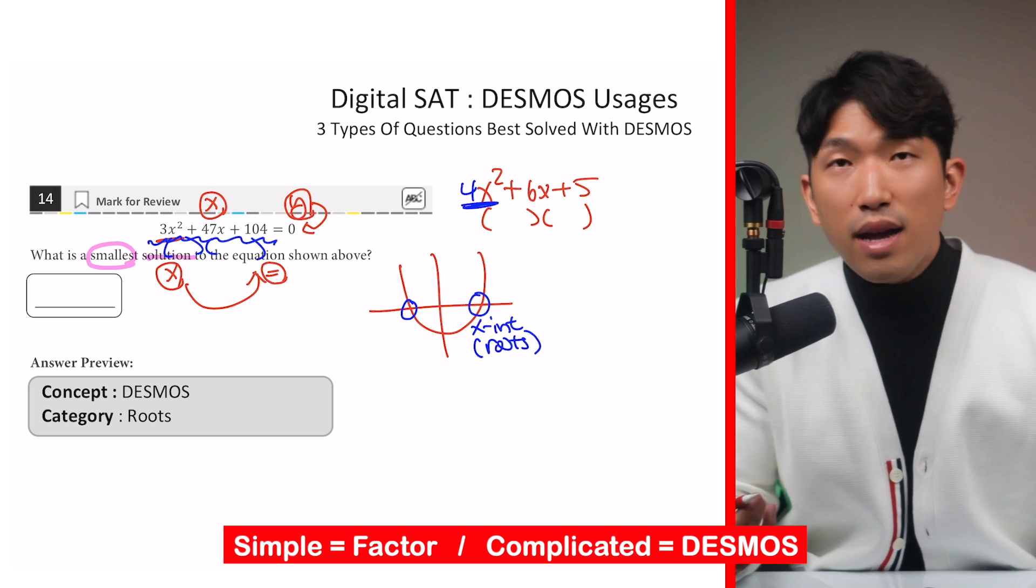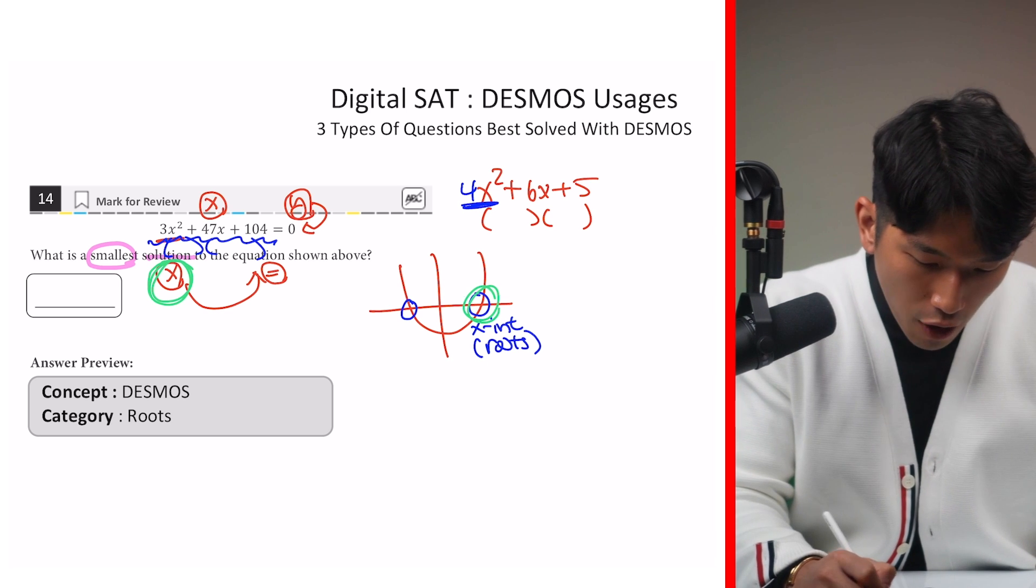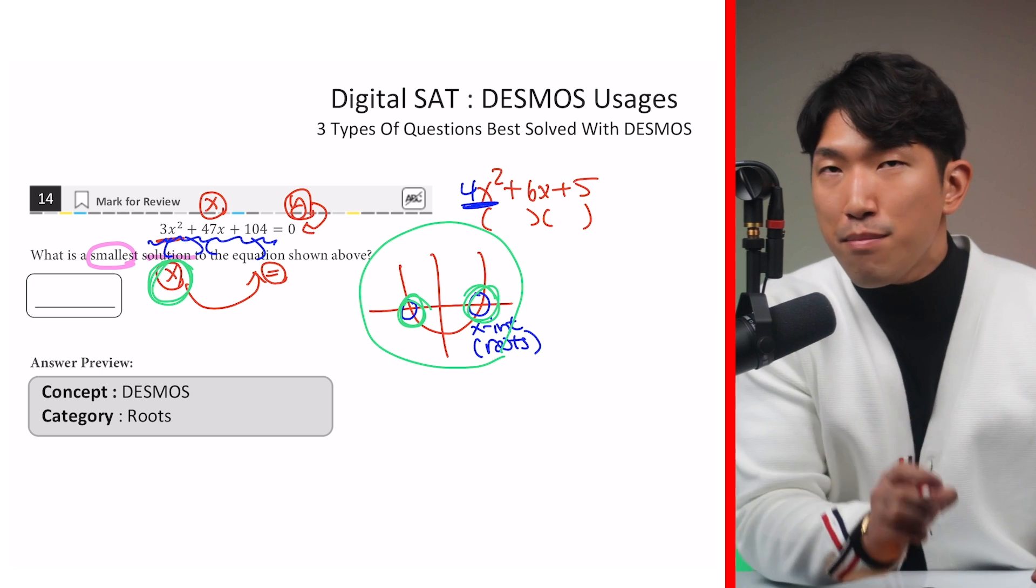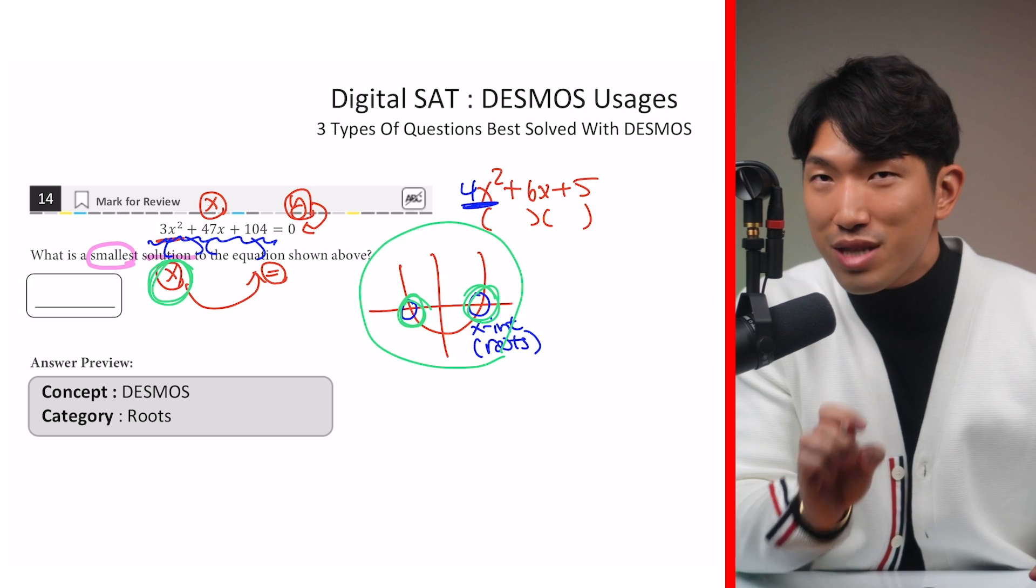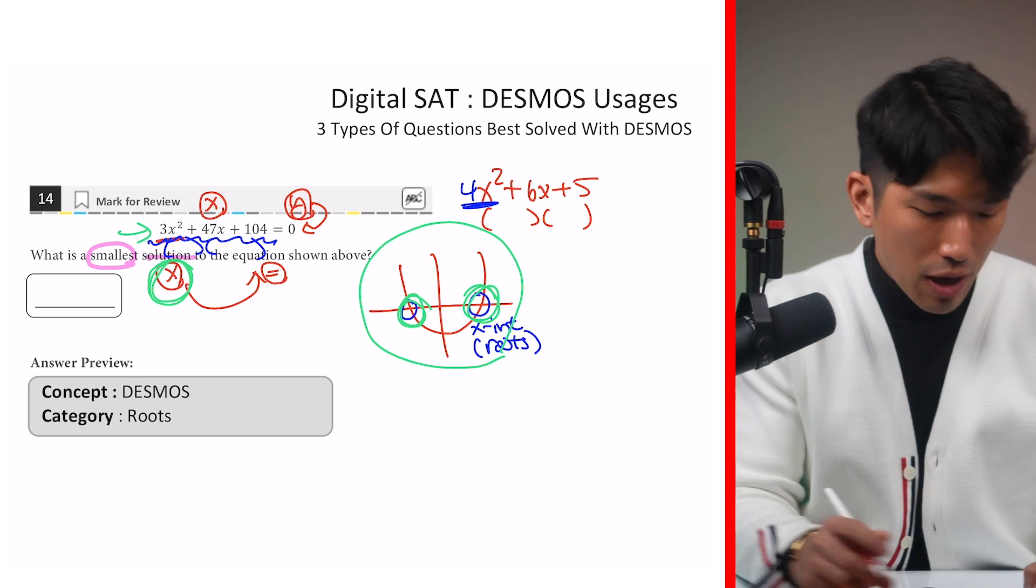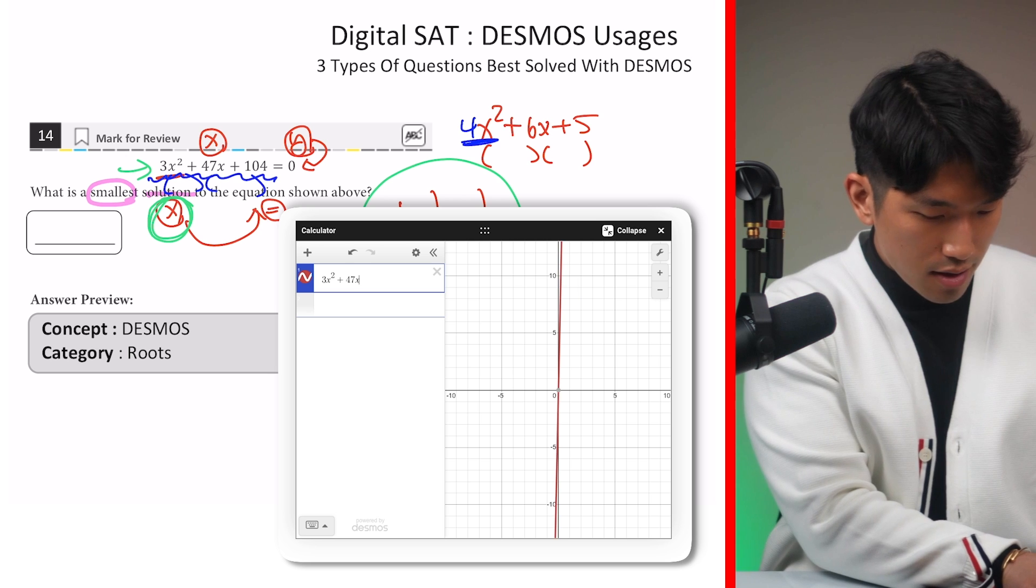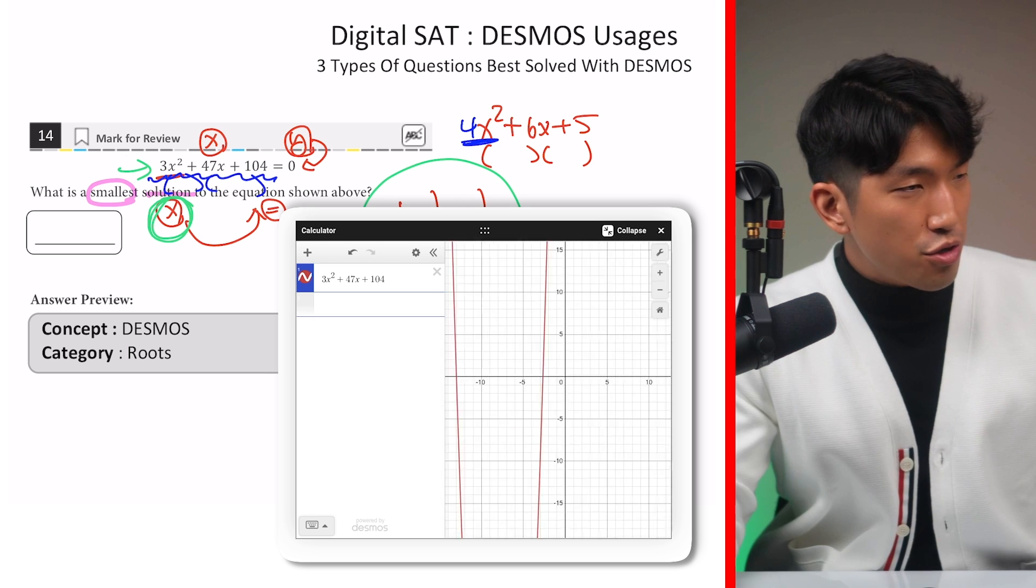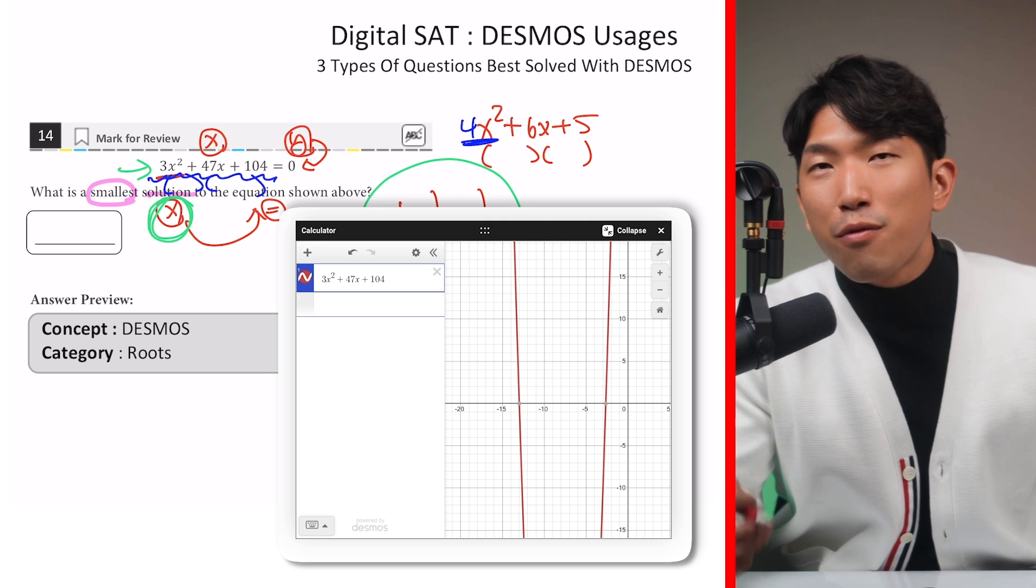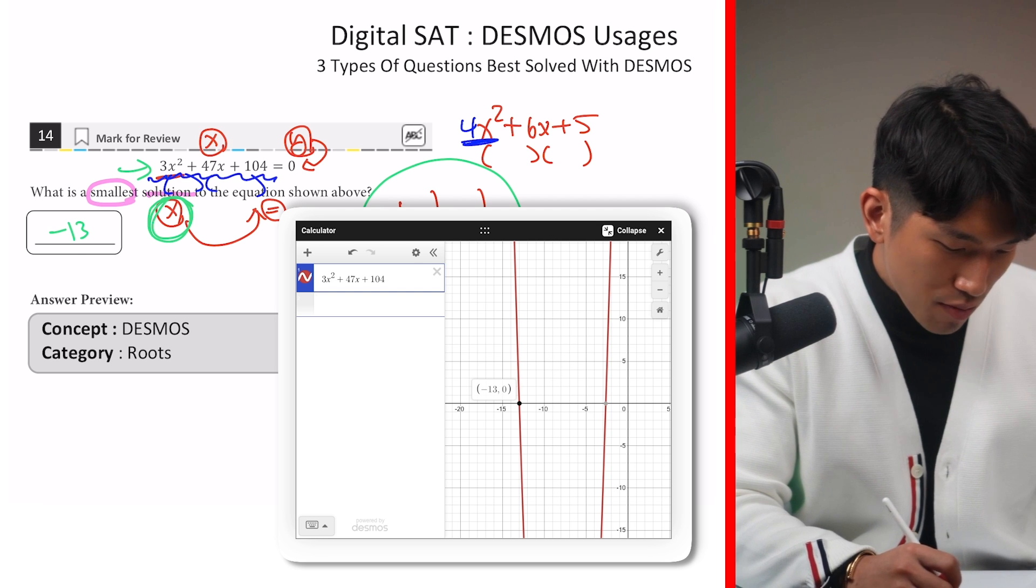If it was something simple as 6x plus 5 like that, then you can simply factor it out like so. But the moment you have a number attached to the x-square or it looks complicated like that, then you don't want to factor it anymore. Instead, we just want to use Desmos. Because if you think about it, we're simply looking for the x-value of our x-intercepts. Which means if we can visually see what the graph looks like, then we can pinpoint exactly where the x-intercept is located and find out what the x-value is. So now, let's pop this equation into the decimal calculator. So our equation is going to be 3x-squared plus 47x plus 104. And if we just zoom out right over here, we see our x-intercept is located at here and here. And because we're looking for the smallest x-intercept, we're going to use negative 13, which means that's going to be our answer.